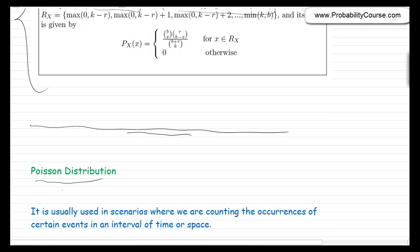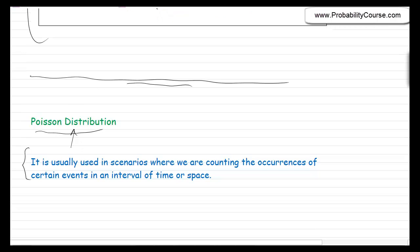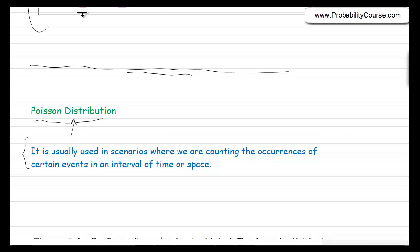Let's talk about the last distribution: the Poisson distribution. The Poisson distribution is very important and is usually used in scenarios where we count occurrences of certain events in an interval of time or space — for example, counting emails received in a day, packets arriving at a network node, or customers arriving at a store.